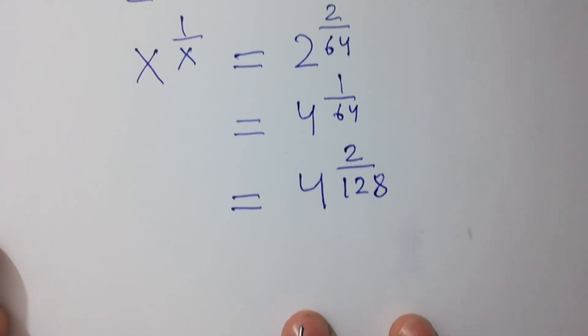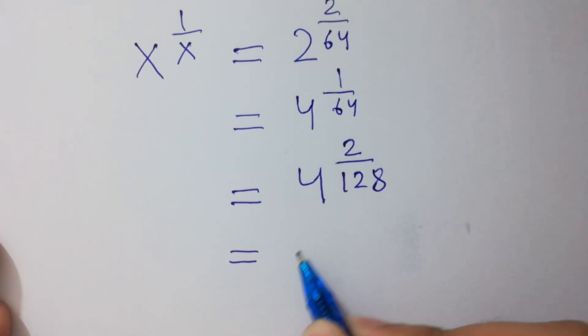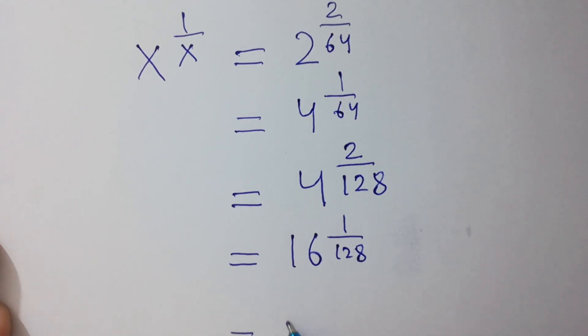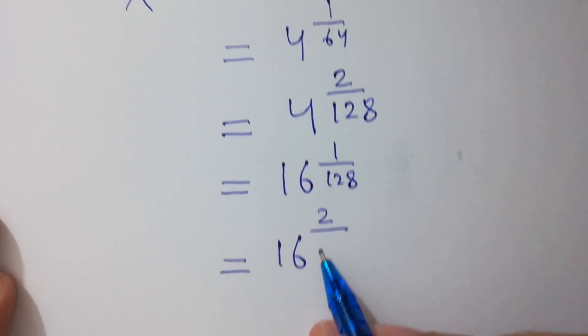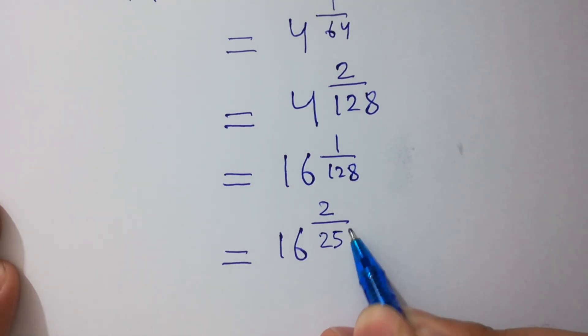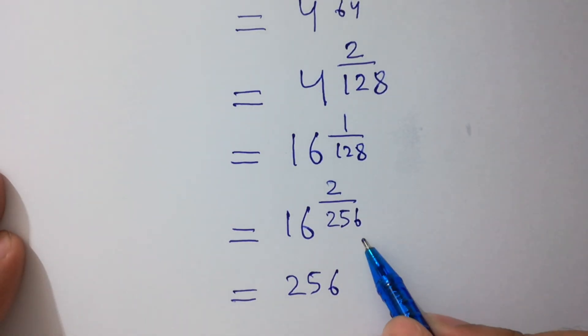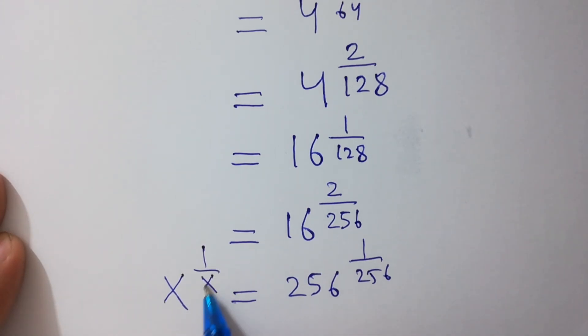So here 4 squared equals to 16 to the power 1 over 128. 1 over 128 can be written as 2 over 256. So here 16 squared equals to 256 to the power 1 over 256, and here we have x to the power 1 over x.